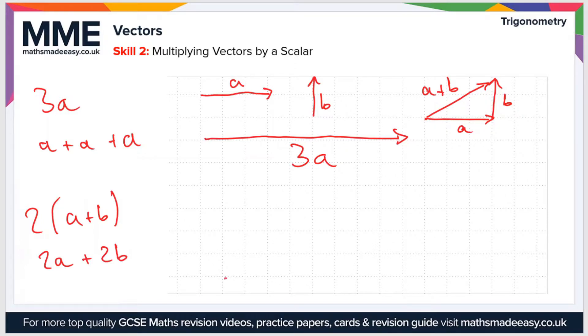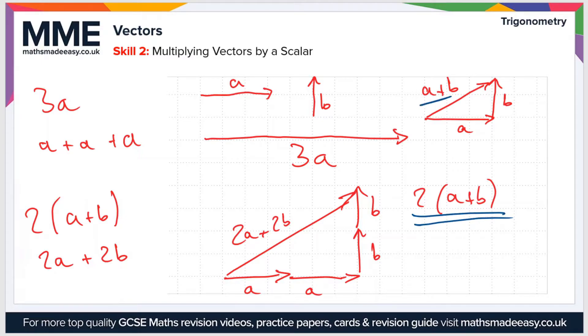If we draw that out, we get 2A. So that's A, A, and then 2B from the end point. So B, B. The vector 2A plus 2B is the same as 2 lots of A plus B. We can say that these are scalar multiples of each other. This vector here, 2 lots of A plus B, is a scalar multiple of A plus B.